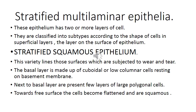The first one is stratified squamous epithelium. This variety is present on surfaces subjected to wear and tear. The basal layer is made up of cuboidal or low columnar cells resting on the basement membrane. On top of the basal layer are two layers of large polygonal cells, and towards the free surface the cells become flattened and squamous. When the topmost layer contains keratin, it is called keratinized epithelium.